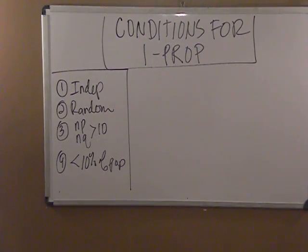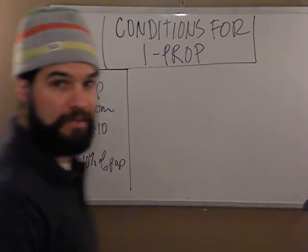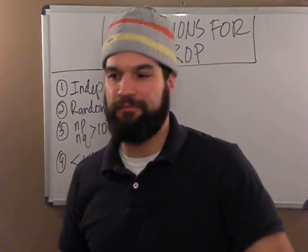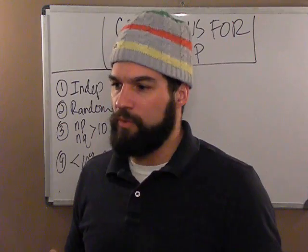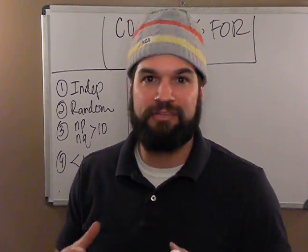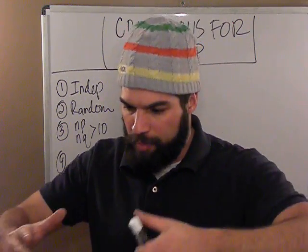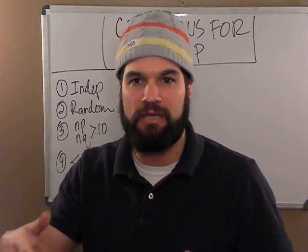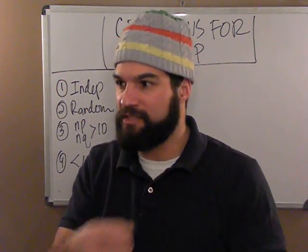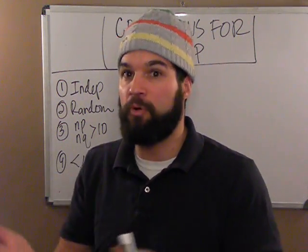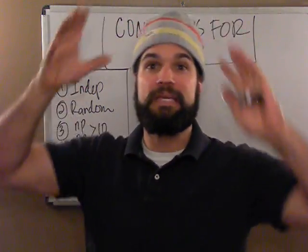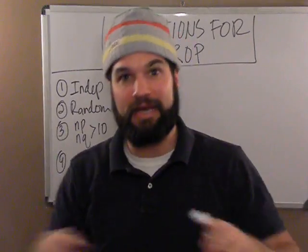We're talking about conditions for doing one proportion and using one proportion sampling distributions. Think about how a sampling distribution is made. We make sampling distributions in class using a bucket of beads — some are red, some are white. We take handfuls and everybody calculates the p-hat, the proportion of successes in their sample. We make a distribution on the board of all the p-hats and we see it's roughly normal.